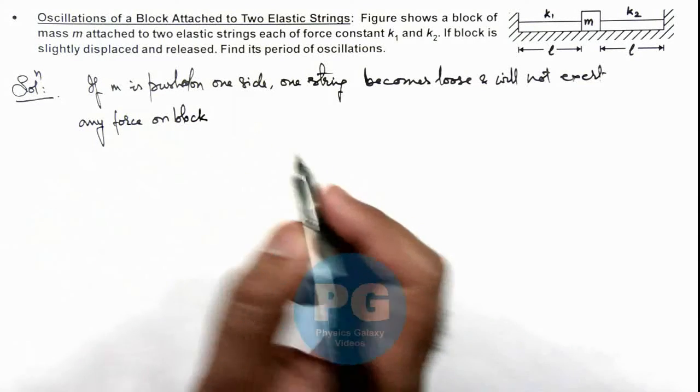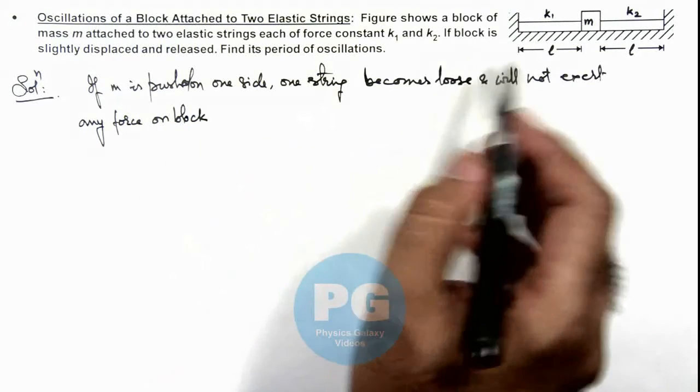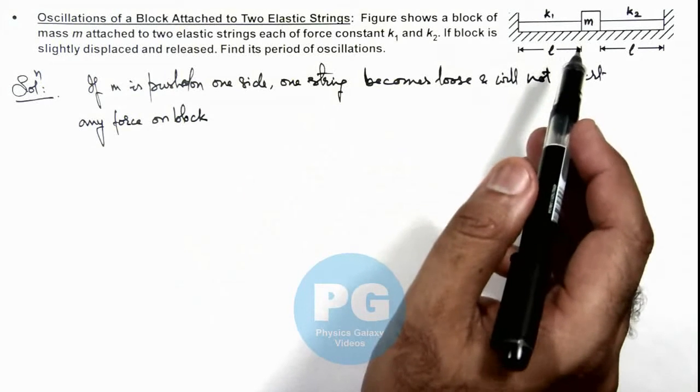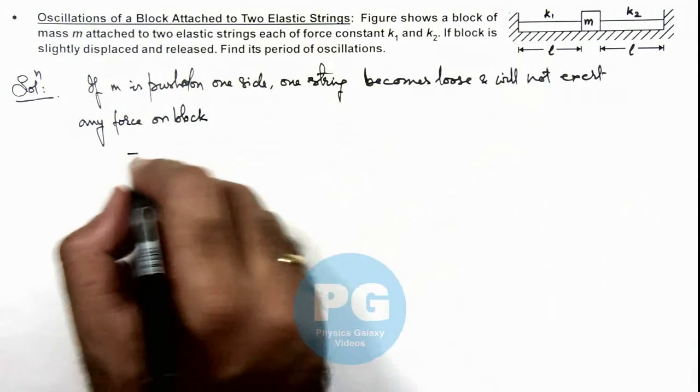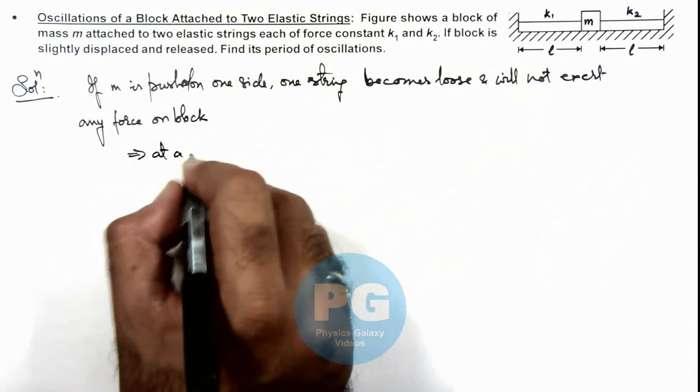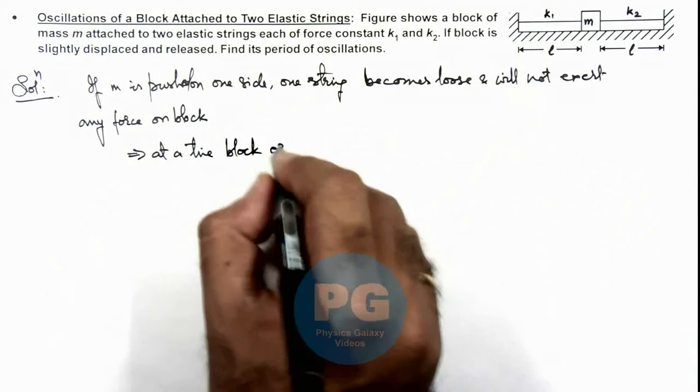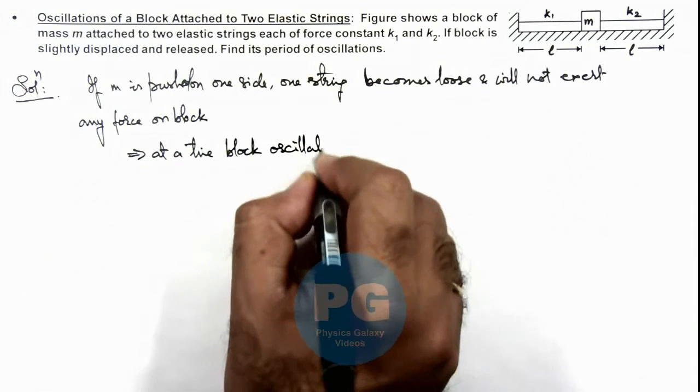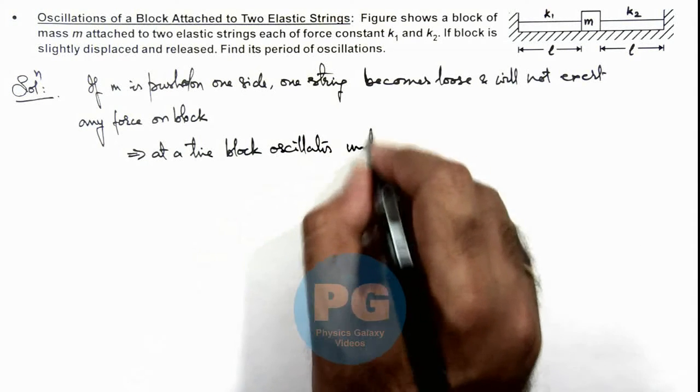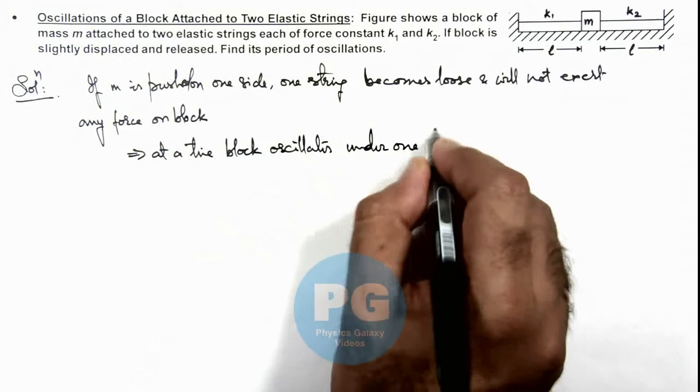So we can say the block will oscillate only in the influence of the remaining string. This implies at a time, the block oscillates under one string only.